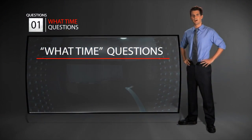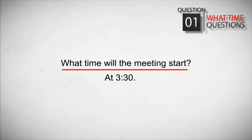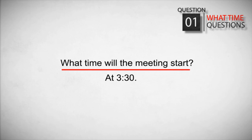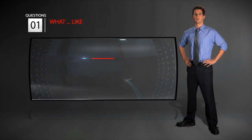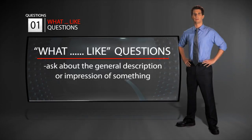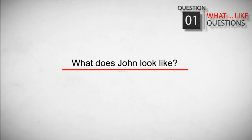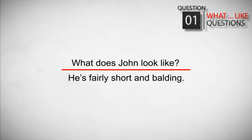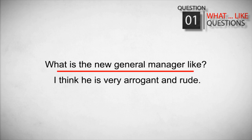Of course, "what time" is used to ask about the time of day. "What time will the meeting start?" — "At 3:30." "What is something like?" can be used to talk about the general condition or general impression of something. "What does John look like?" — "He's fairly short and balding." "What is the new manager like?" — "I think he's very arrogant and rude."